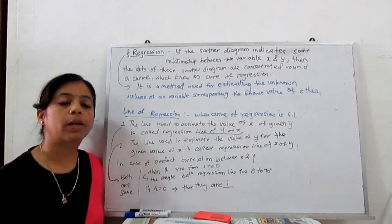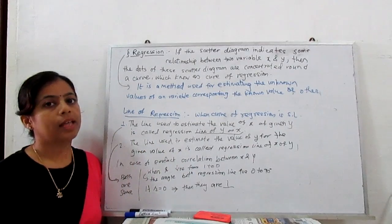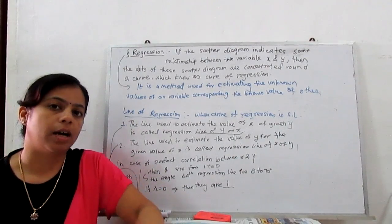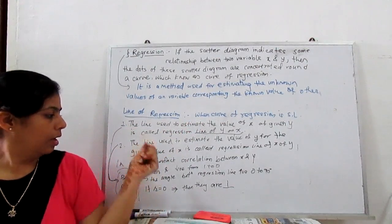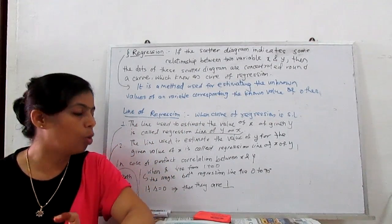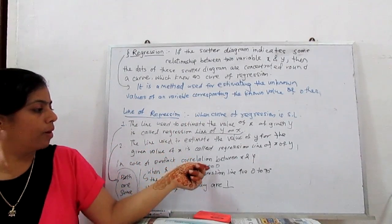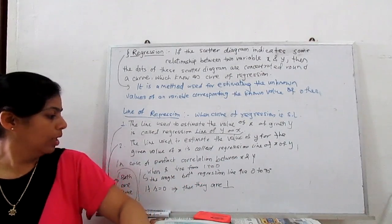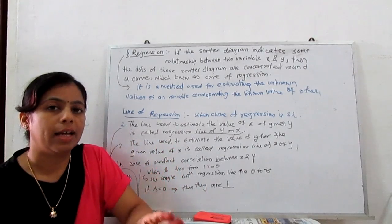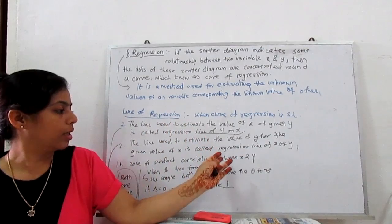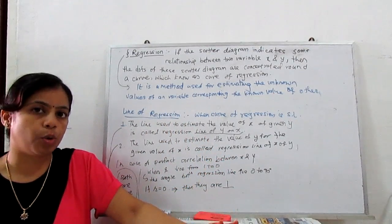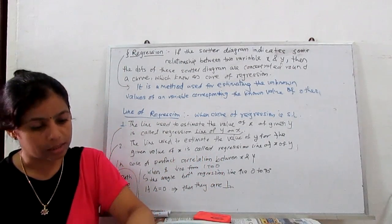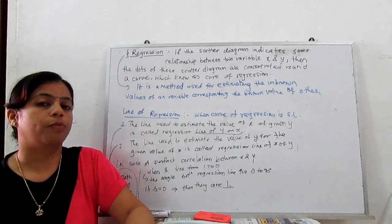In the case of perfect correlation in the data, both regression lines coincide — they are the same with no difference between them. As the correlation coefficient r decreases from 1 toward 0, the angle between the two regression lines increases from 0 to 90 degrees. When r is 0, both lines are perpendicular to each other, making a 90-degree angle.